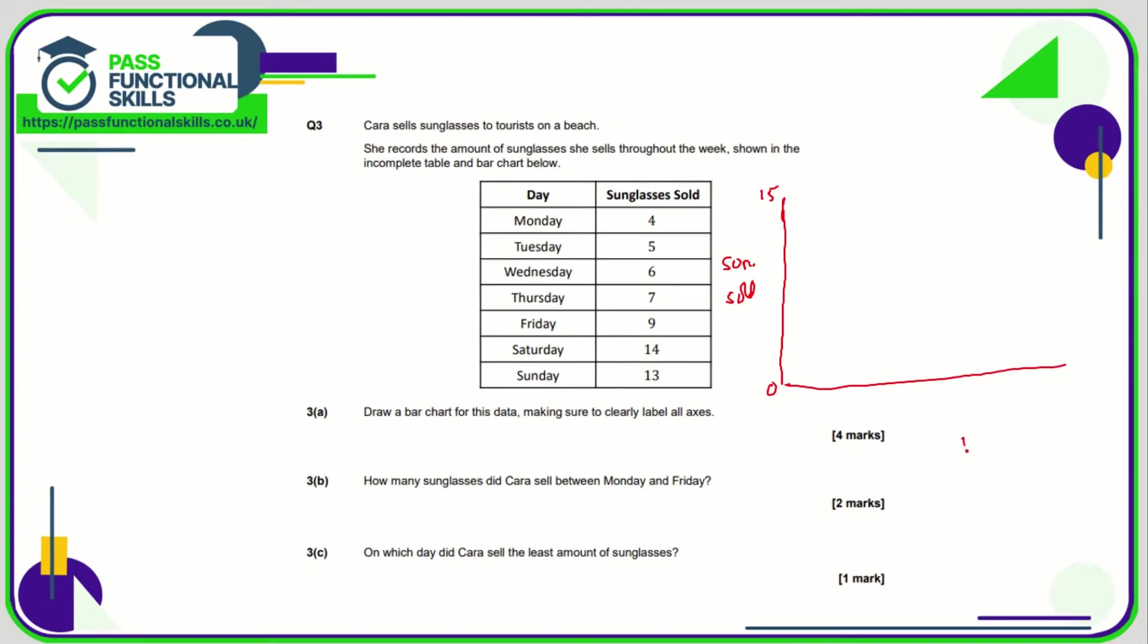Across the bottom we have day, broken down to Monday, Tuesday, Wednesday, Thursday, Friday, Saturday, Sunday. The key thing is the bars are all the same width and equally spaced with a gap between them. Monday goes to four, Tuesday to five, slightly taller than Monday. The tallest should be Saturday, which goes all the way up to fourteen.